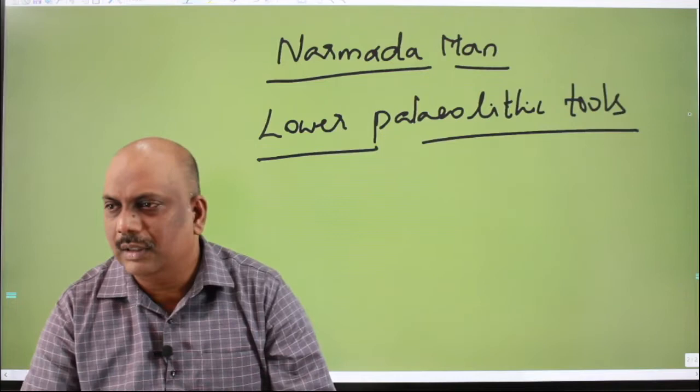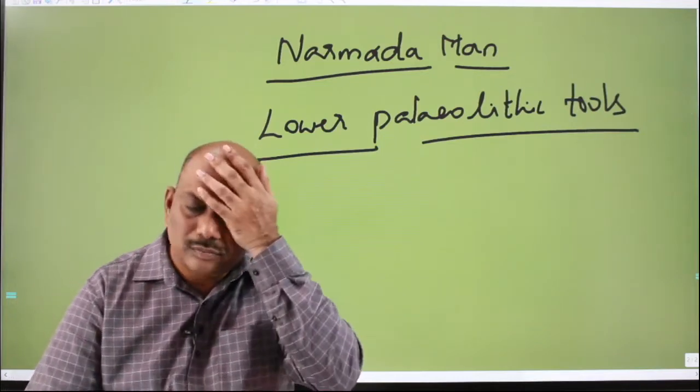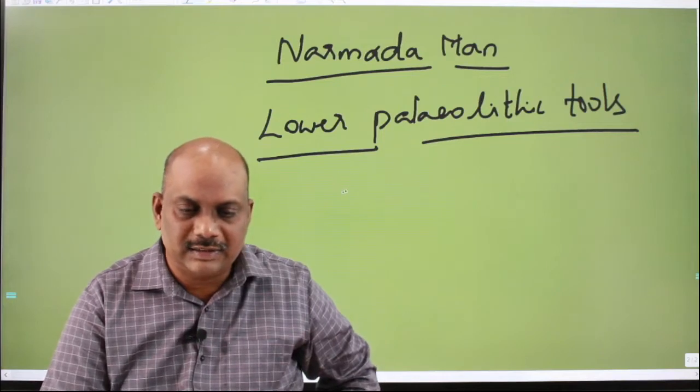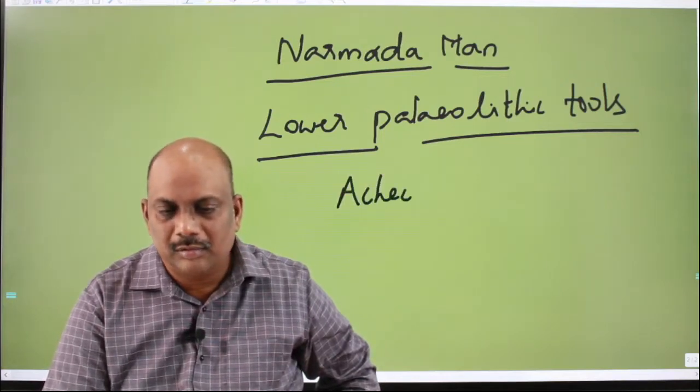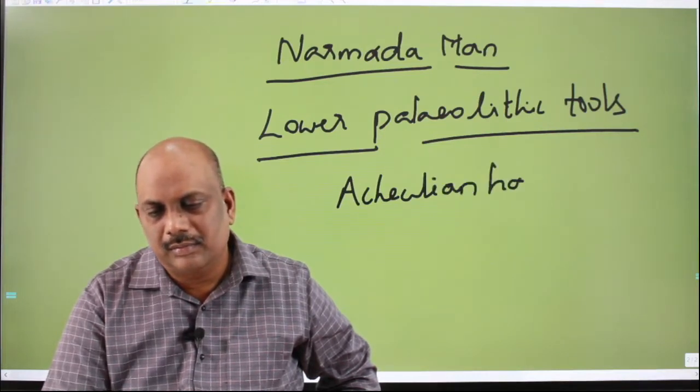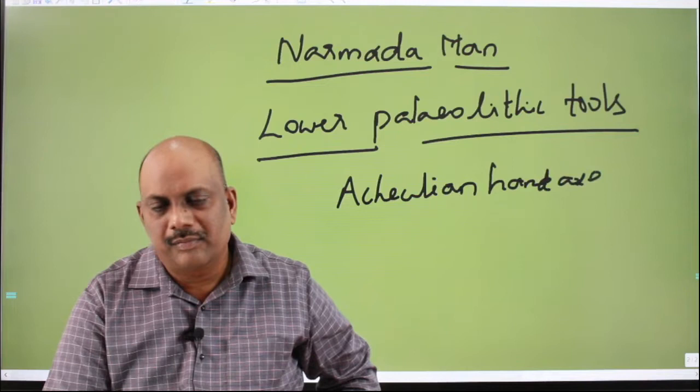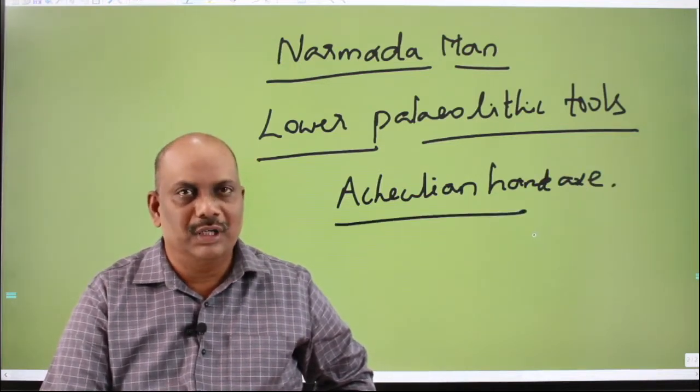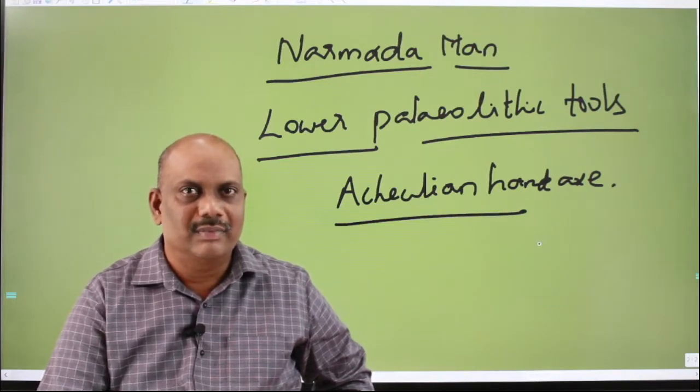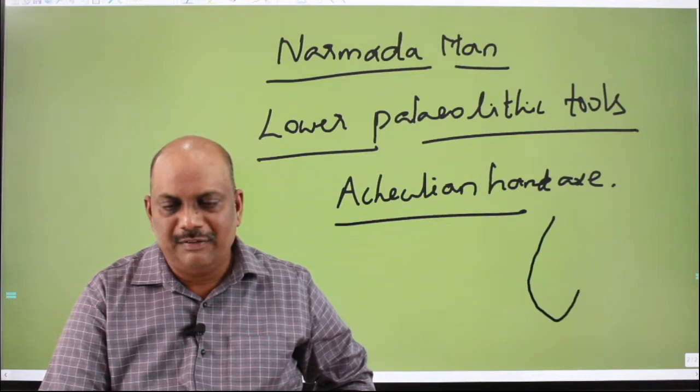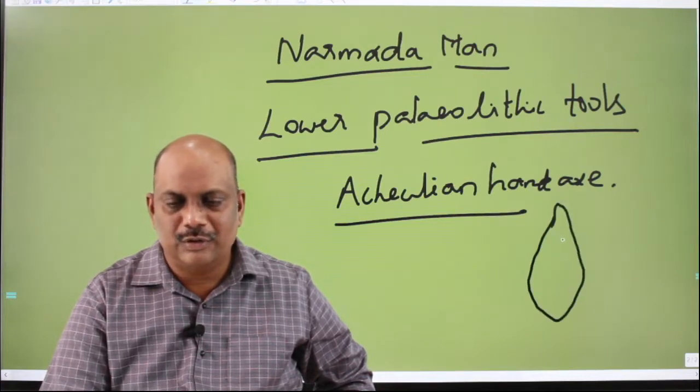Lower paleolithic tools. The most important Acheulean hand axe. It's a very important tool complex of lower paleolithic period. This is a teardrop shape, bifacially flaked stone tool.